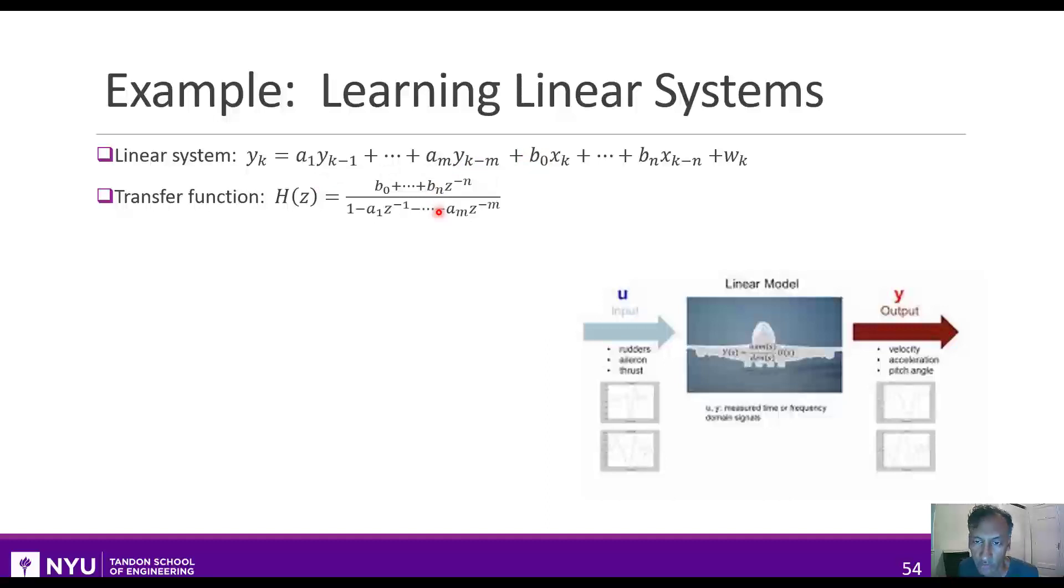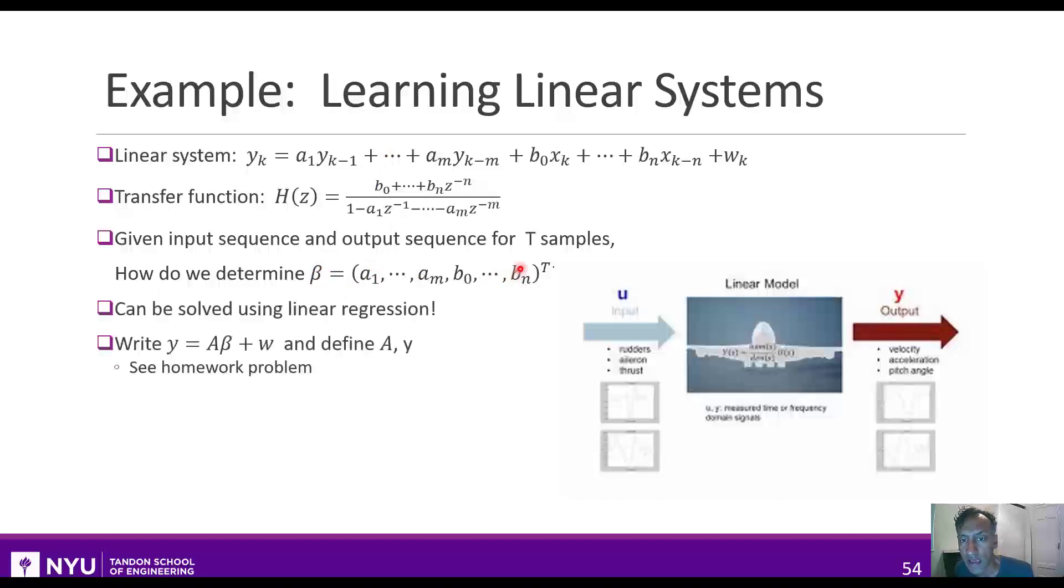Again, though, if you don't know this, don't worry about it. Just think about it as some type of relationship between input and output data over time. Now, one problem that you might have when you're trying to model these relationships is that you want to learn these coefficients. That's the a and b's from input output data. That is, we want to find the parameter vector beta which includes all those coefficients.